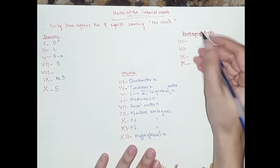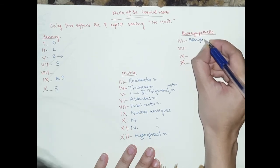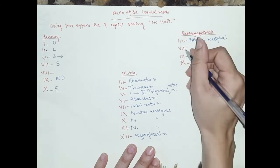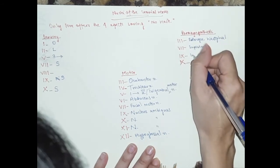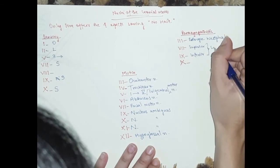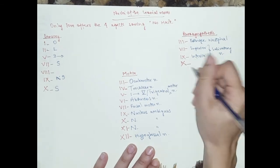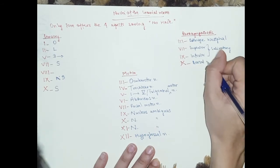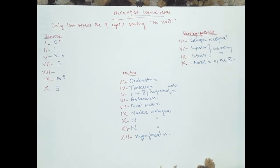Then we move on to parasympathetic, because I mentioned them before. Three would be Edinger-Westphal. Seven would be superior salivatory nucleus. Nine would be inferior salivatory nucleus. Ten would be dorsal nucleus of the vagus.